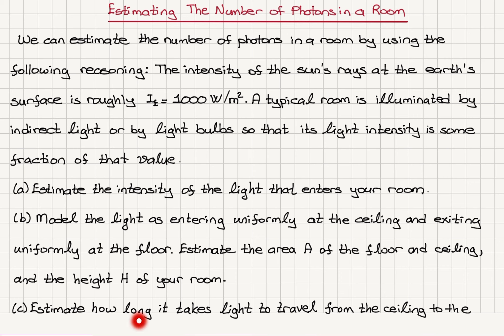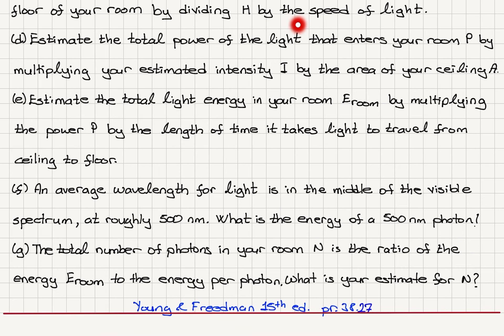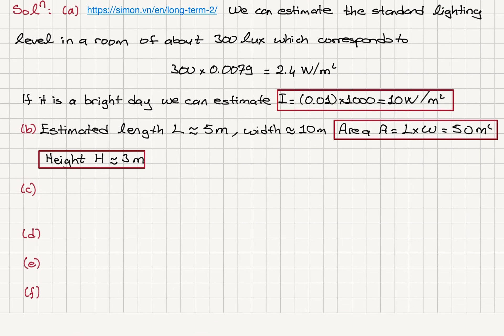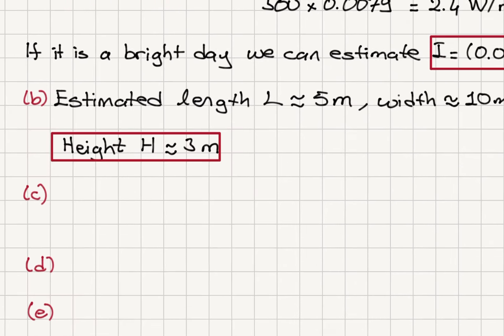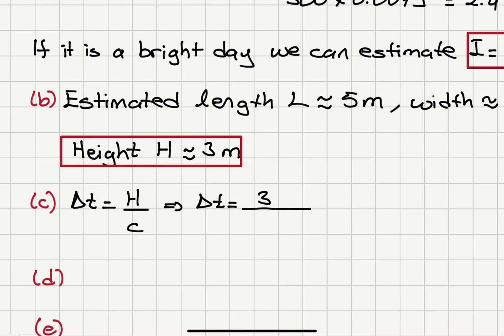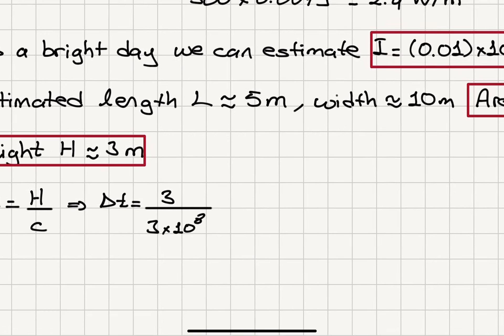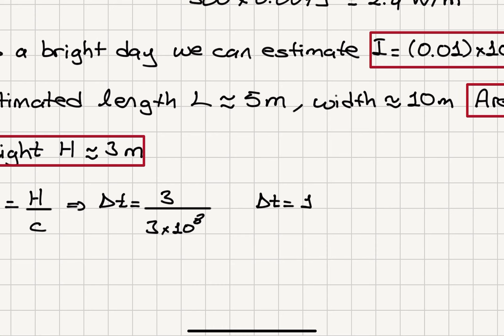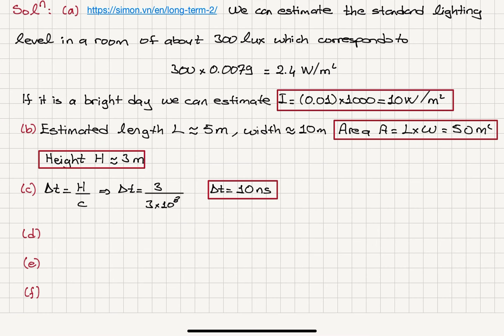For part c, we estimate how long it takes light to travel from the ceiling to the floor by dividing h by the speed of light. The light travels a distance equal to the height of the room with speed c. So the time it takes is 3 meters divided by 3 times 10 to the 8 meters per second, giving us roughly 10 nanoseconds.